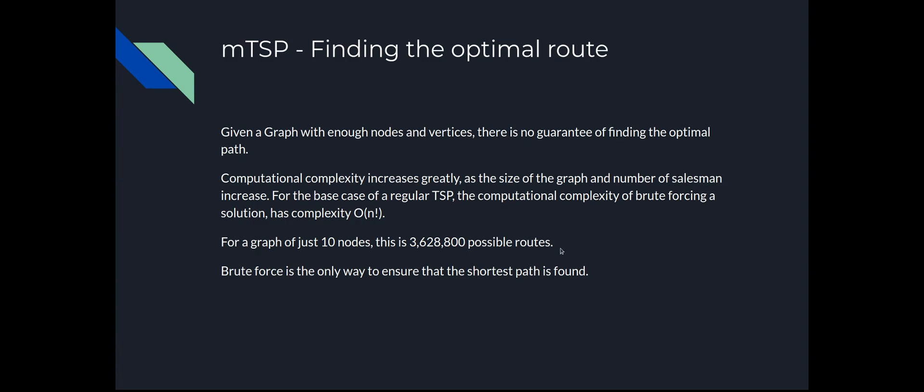Finding the optimal solution for a large enough graph can be quite difficult, because the only way to guarantee an optimal solution is an exhaustive search — trying every possible route and every possible combination of routes. The computational complexity is N factorial, so for a graph of just 10 nodes there are 3,628,800 possible routes. For 100 nodes the number becomes ludicrous, and for 1000 nodes an exhaustive search simply isn't feasible, particularly if you need the computation done in a short amount of time.